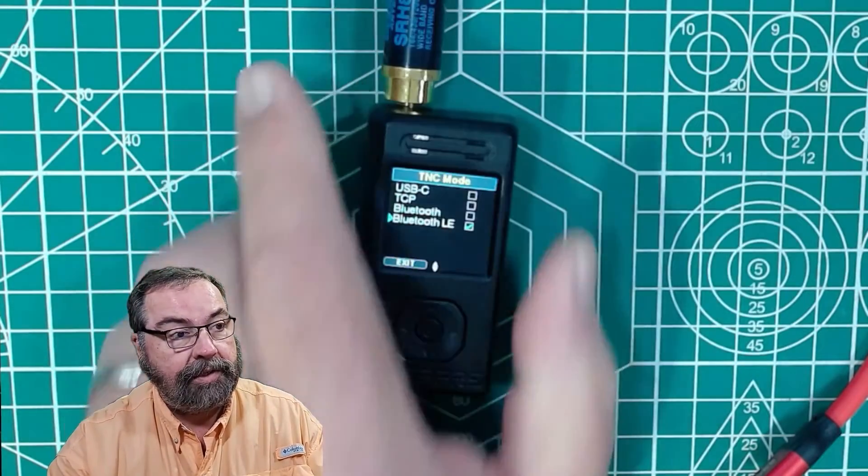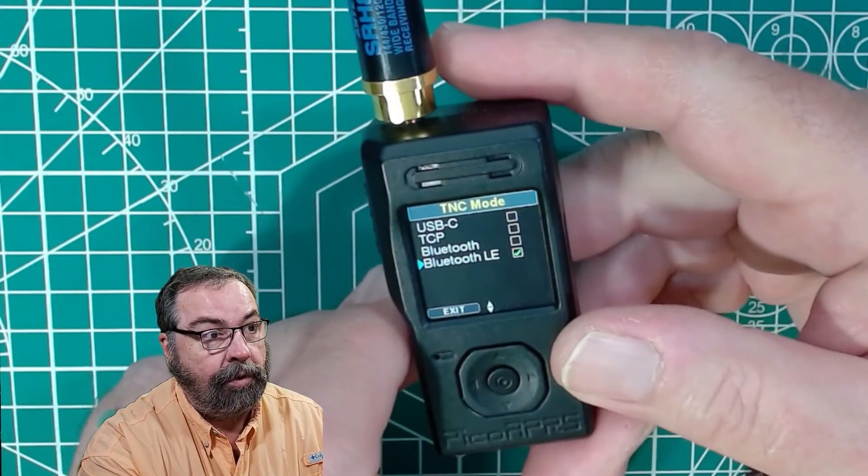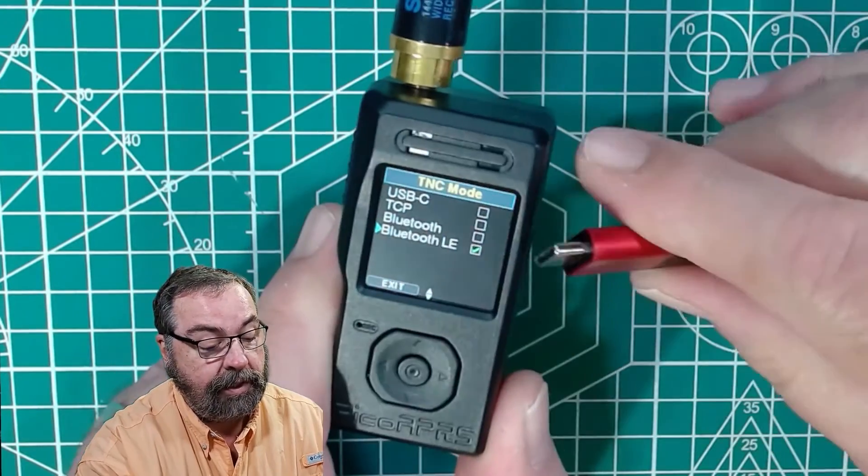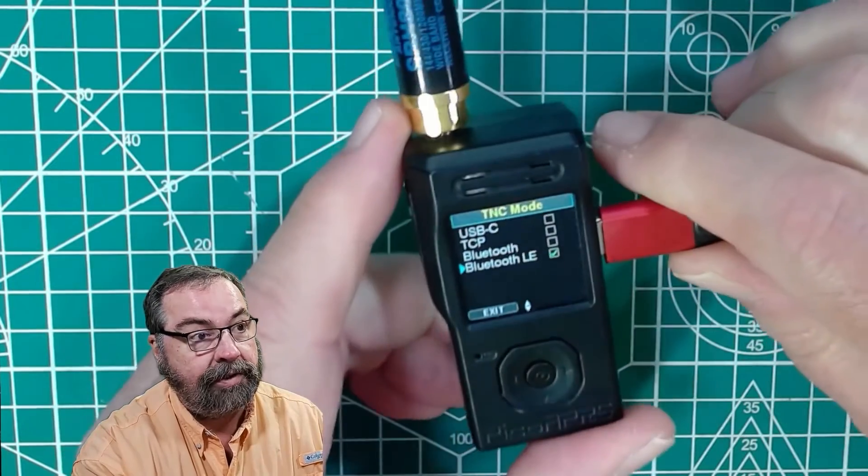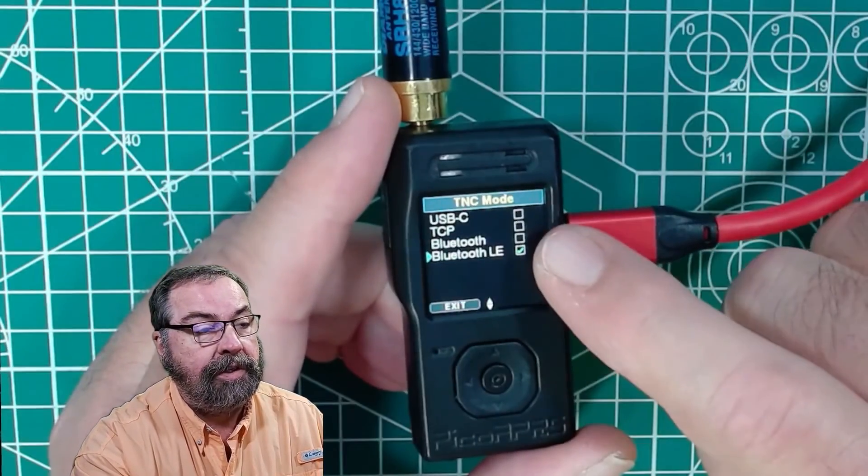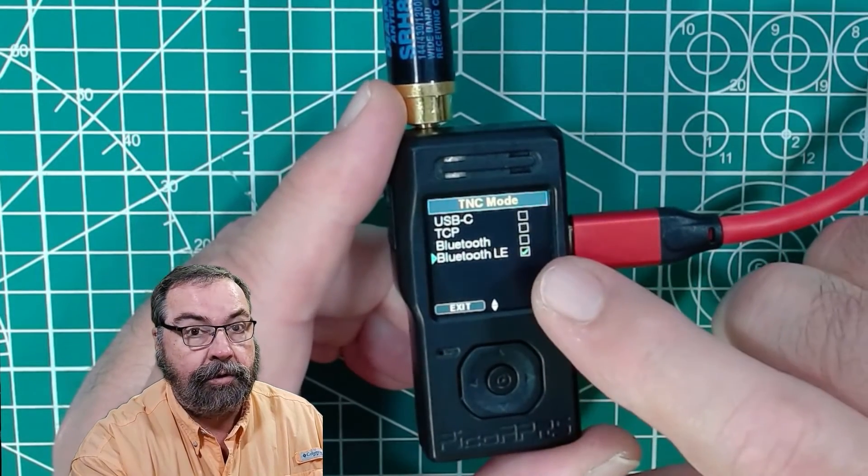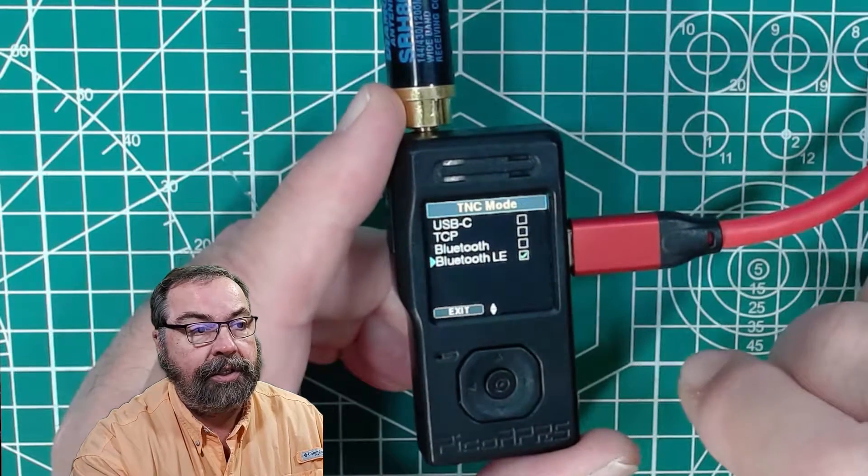Now, if you use it as a TNC, you have several options here. It will TNC over USB-C. Let me plug my power back in because this battery is not very charged up. You can use it as a TNC over USB, over TCP, internet, so your local LAN. Bluetooth or Bluetooth low energy. So let me fire up my phone and connect to APRS.fi.